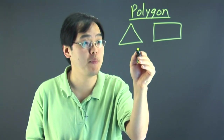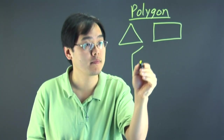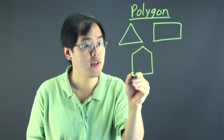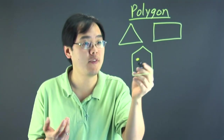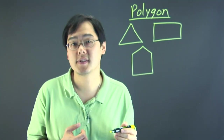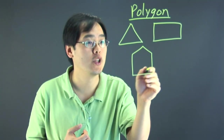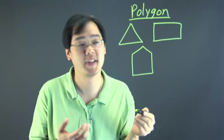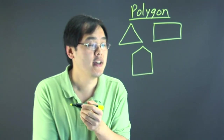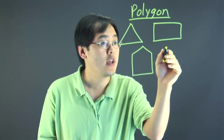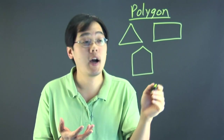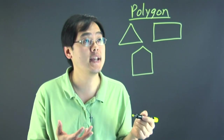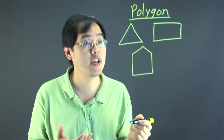If you have a pentagon, you have a five-sided closed shape made up of five line segments — it looks more like a house, but you get the idea. And it goes on and on: you have six, seven, eight-sided — an octagon is an eight-sided closed shape.